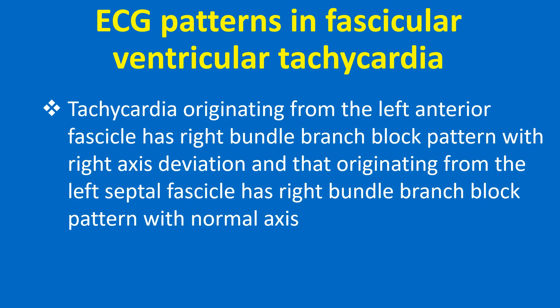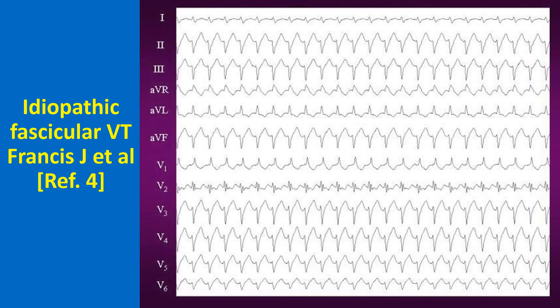Tachycardia originating from the left anterior fascicle has a right bundle branch block pattern with normal axis. A 24-hour DCG of idiopathic fascicular ventricular tachycardia shows the classical right bundle branch block pattern with leftward axis morphology, suggestive of posterior fascicle origin.